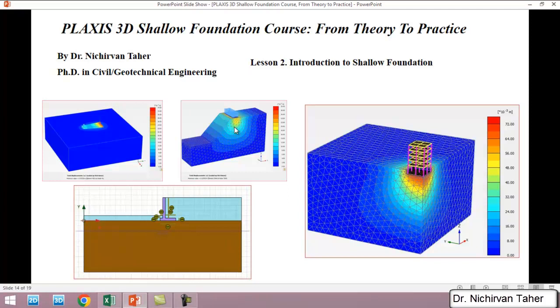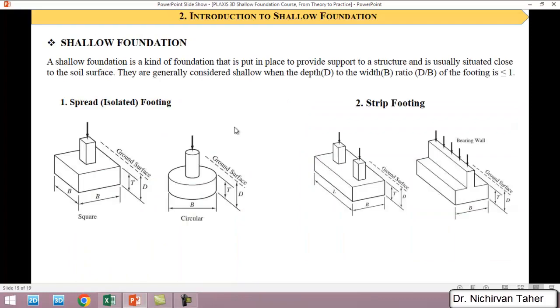Shallow foundation can be defined as a kind of foundation that is constructed near the ground surface to support a structure. They are generally considered shallow foundations when the depth of the foundation to the width of the foundation ratio is less than one. So the depth of the foundation is the distance from the bottom of the foundation to the ground surface, and width of the foundation is the short dimension of the foundation.